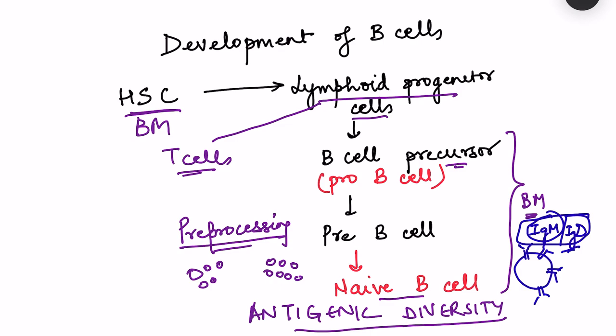After formation in the bone marrow, the naive B cell moves into the blood and into different lymph nodes and lymphoid tissue in the GIT, respiratory tract, and elsewhere. It sits there alongside populations of T cells, B cells, and macrophages in these lymph nodes. Now, what happens when there is exposure to antigen?